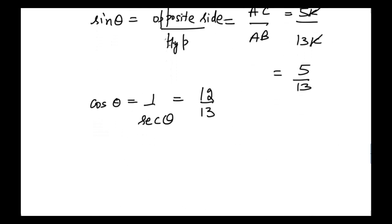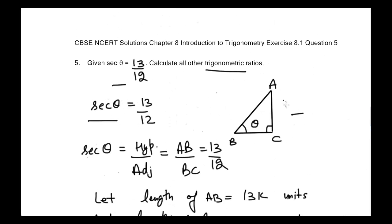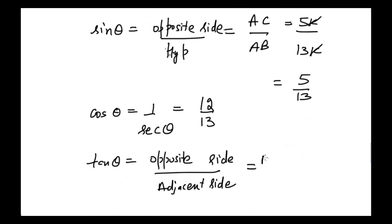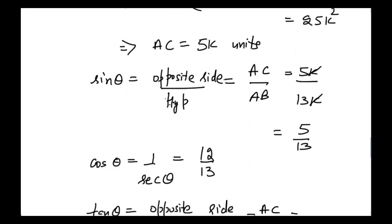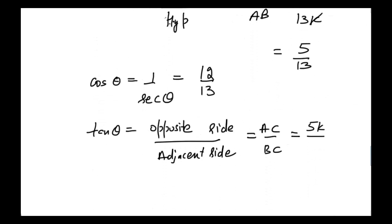Tangent of theta is equal to opposite side divided by adjacent side. The opposite side to theta is AC and the adjacent side is BC, so we get AC divided by BC. AC is 5k and BC is 12k; the k's cancel, so tangent theta is equal to 5 divided by 12.